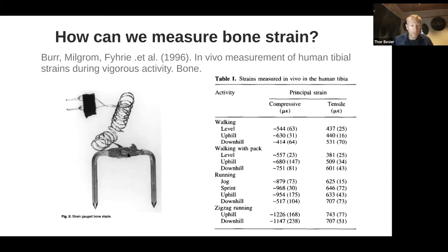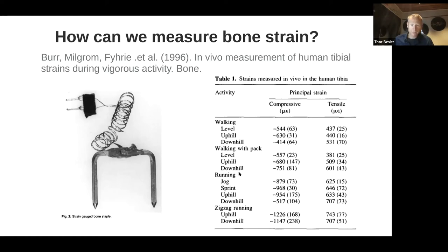As the staple bends, it moves the gauges and you can measure the electrical potential change. This is a standard strain gauge to measure force, but implanted directly into the bone, giving us a direct understanding of that localized strain. You can see both compressive and tensile strains during activities like walking, jogging, running, and sprinting — one part of the bone undergoes a cycle of loading that goes both compression and tension.